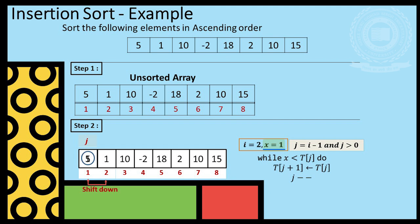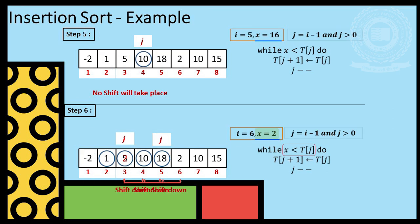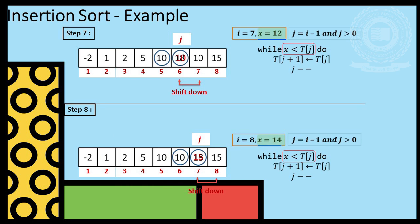Then 10 is compared with 5 and no swapping. Then minus 2 is placed at the first position after swapping with all. Next element is 18 and no swapping is done.